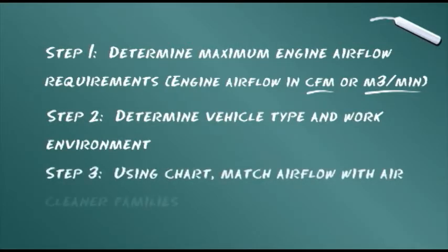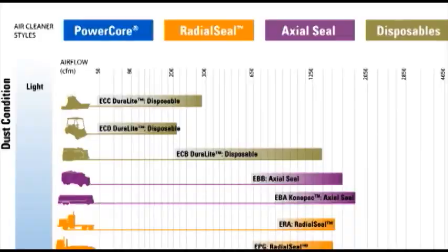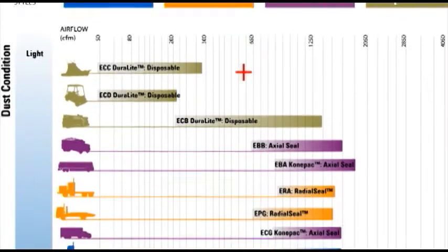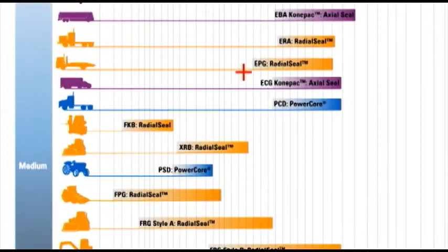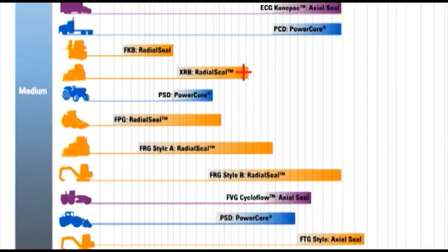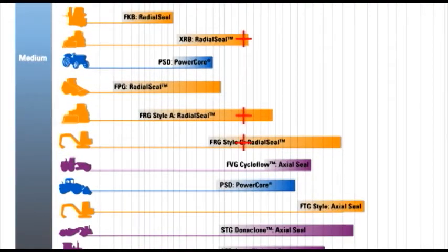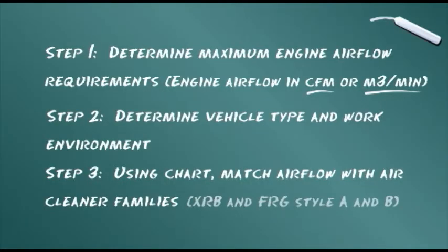As the third step, follow the line on the chart matching your airflow rate. In this case, in the medium dust environment, three air cleaner families meet the 600 CFM, or 17 cubic meters per minute requirement. The chart shows they are the XRB, the FRG style A, and the FRG style B.